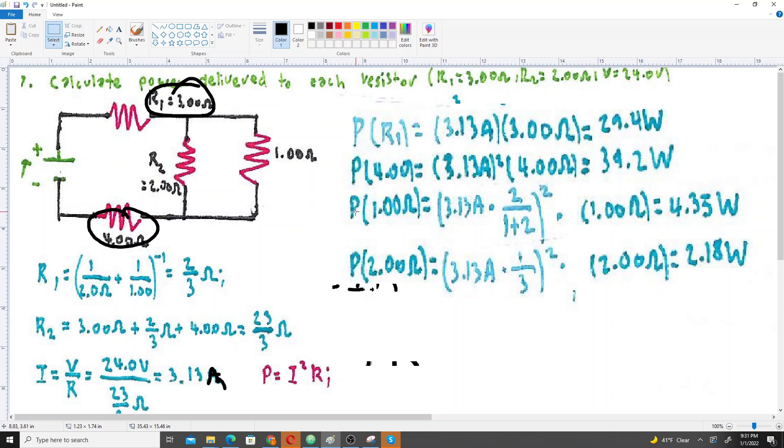So 3.13 amps squared times 3 ohm, I'm using this formula P equals I squared times R. So all you have to do is put in the current and then put in the resistance, and that'll give us the answer for the 3 and the 4. But we have to do things slightly differently when we get to...